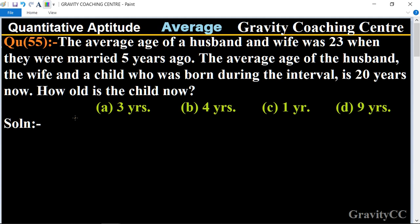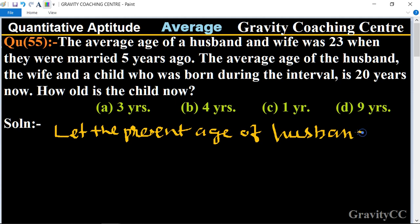In this question, first of all let the present age of husband, wife, and a child be x, y, and z years.